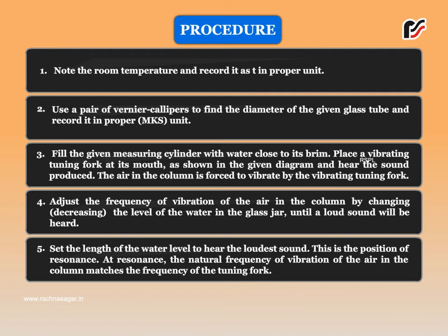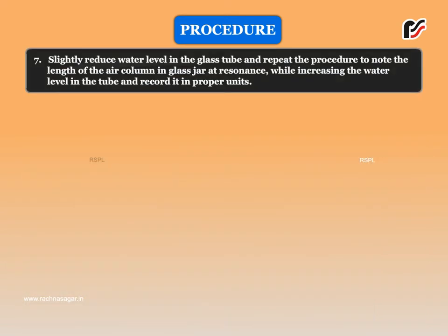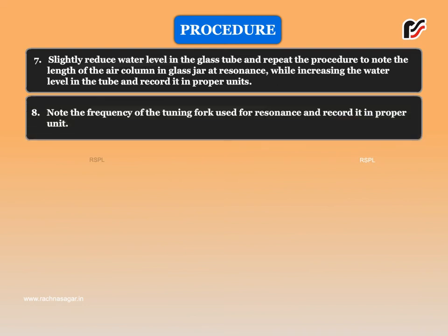Set the length of the water level to hear the loudest sound — this is the position of resonance. At resonance, the natural frequency of vibration of the air in the column matches the frequency of the tuning fork. Note the length of the air column in the glass jar at the position of resonance while decreasing the water level and record it in proper units. Slightly reduce the water level and repeat the procedure to note the length of the air column at resonance while increasing the water level. Note the frequency of the tuning fork used and record it in proper units.